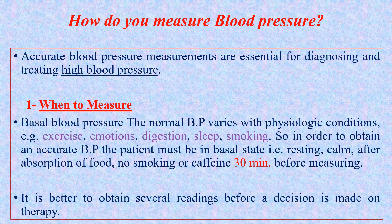Therefore you won't be able to give the correct treatment if the patient is hypertensive. Regarding the term 'basal blood pressure': hypertension is defined as basal blood pressure above 140 systolic and above 90 diastolic. 'Basal blood pressure' means the patient must be completely resting, after absorption of food, with no smoking or caffeine 30 minutes before measuring.